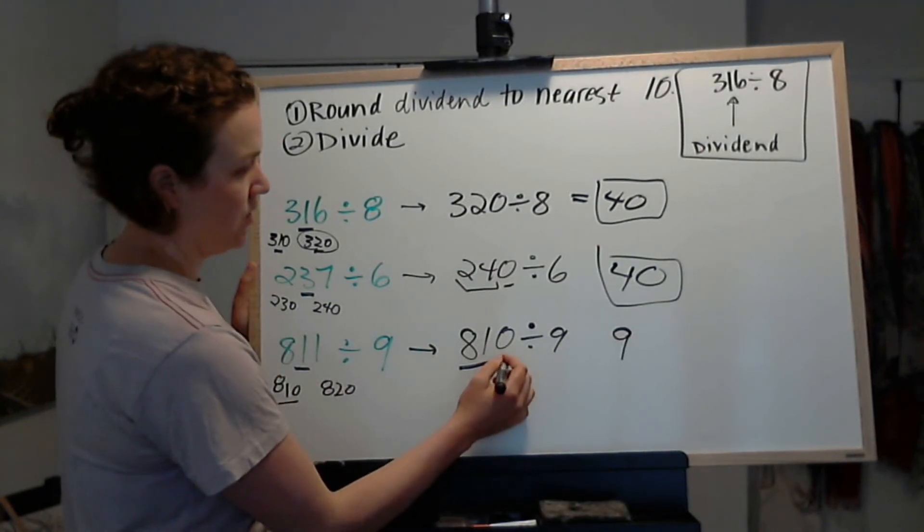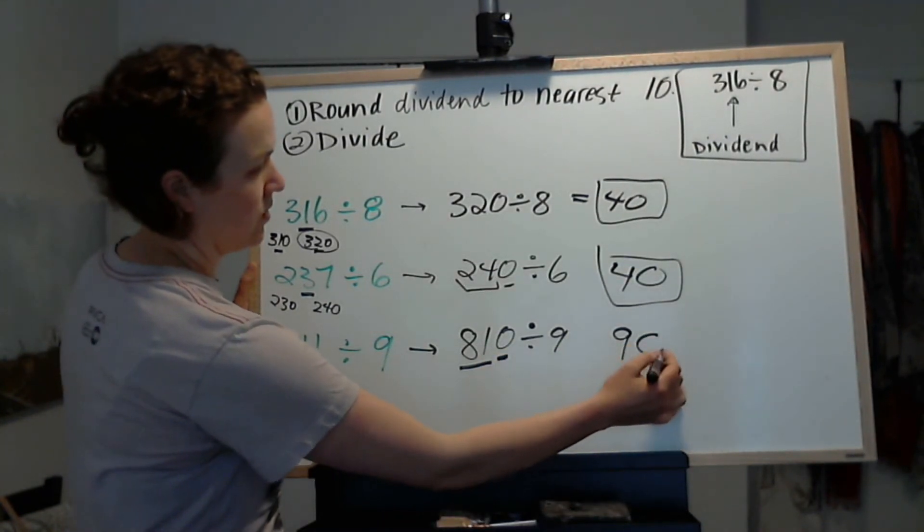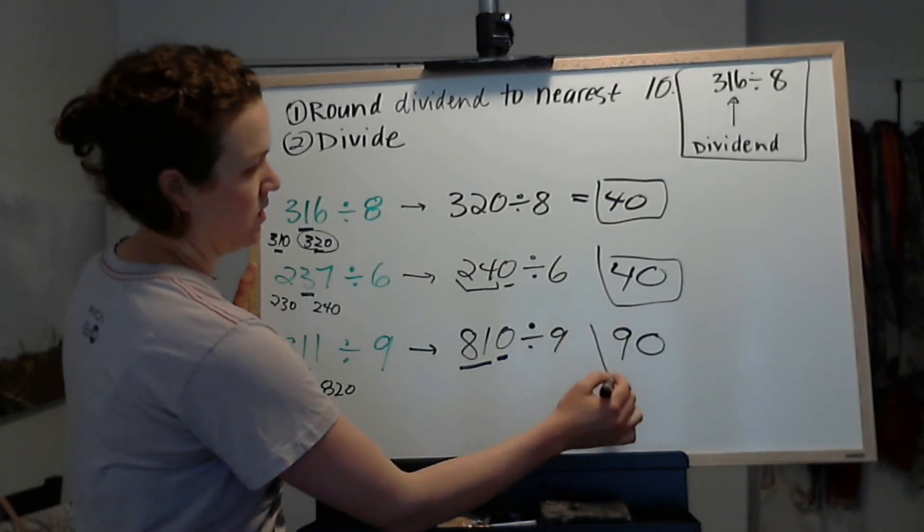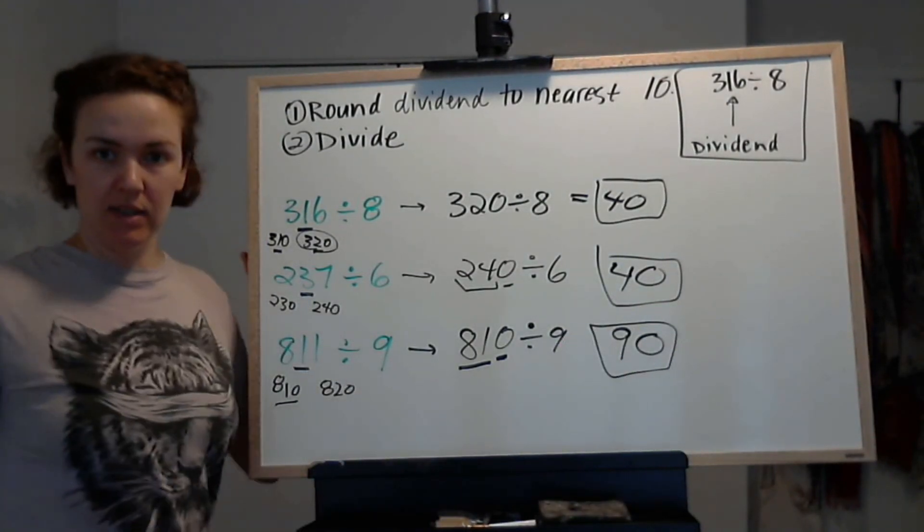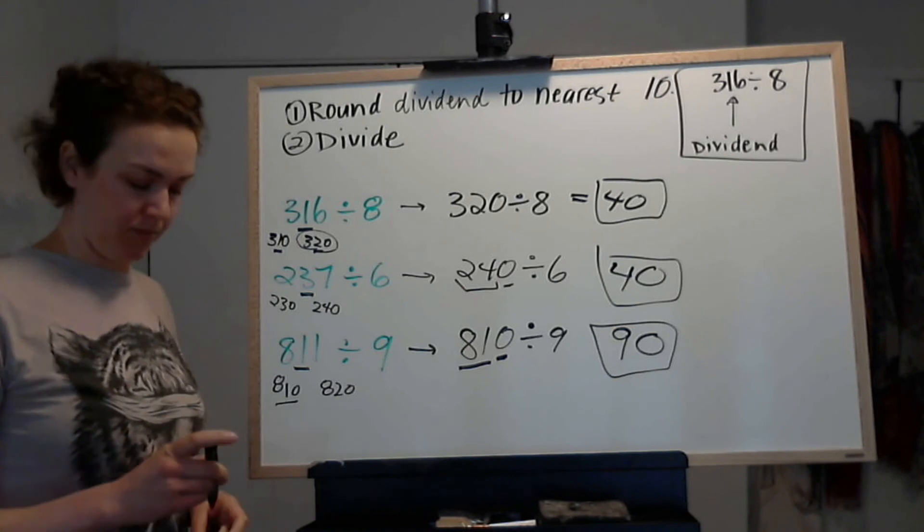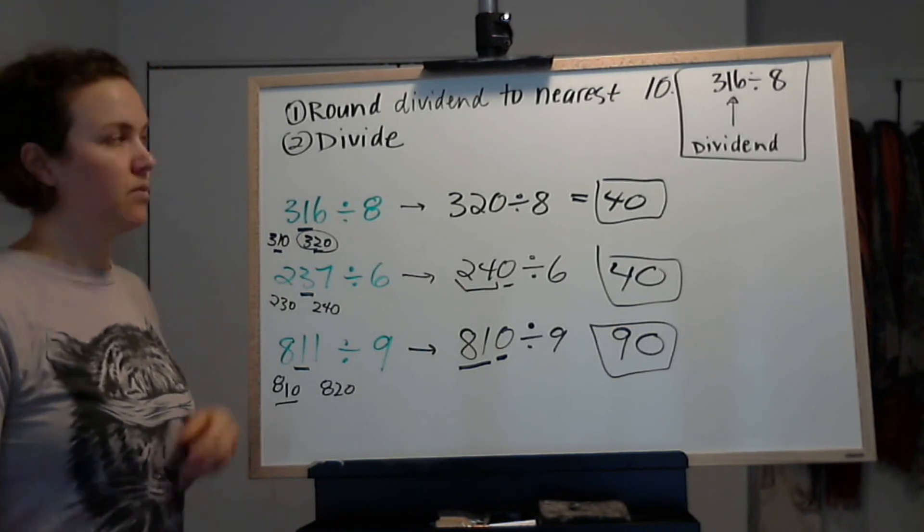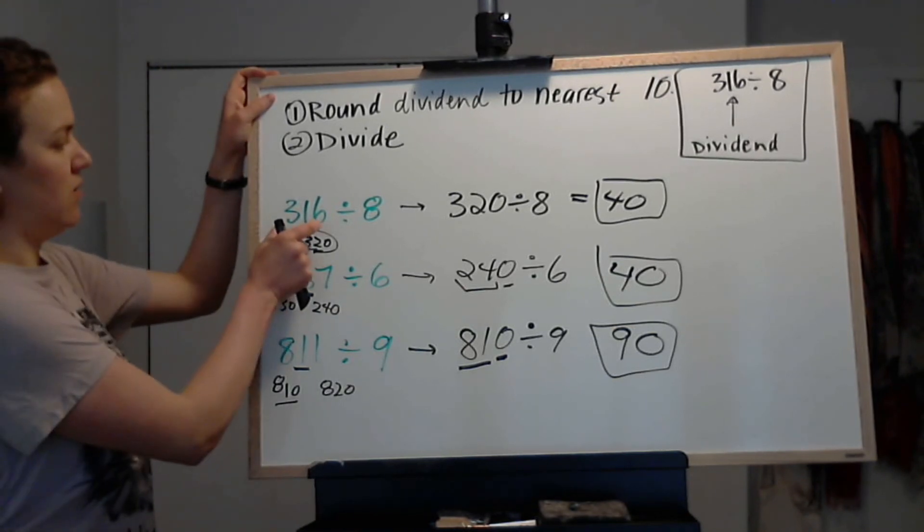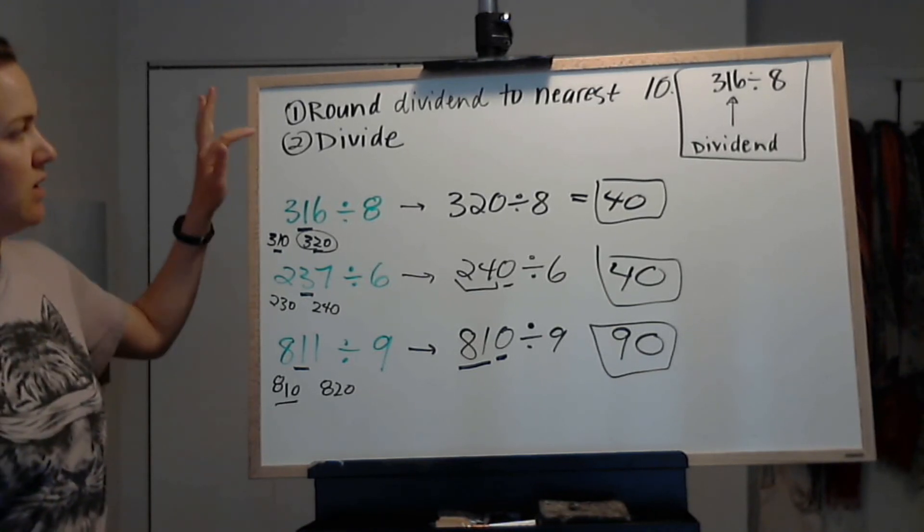But we have this extra 0, so we need to multiply our answer by 10. So our answer for that one is 90. So first round the first number to the nearest 10, then you divide.